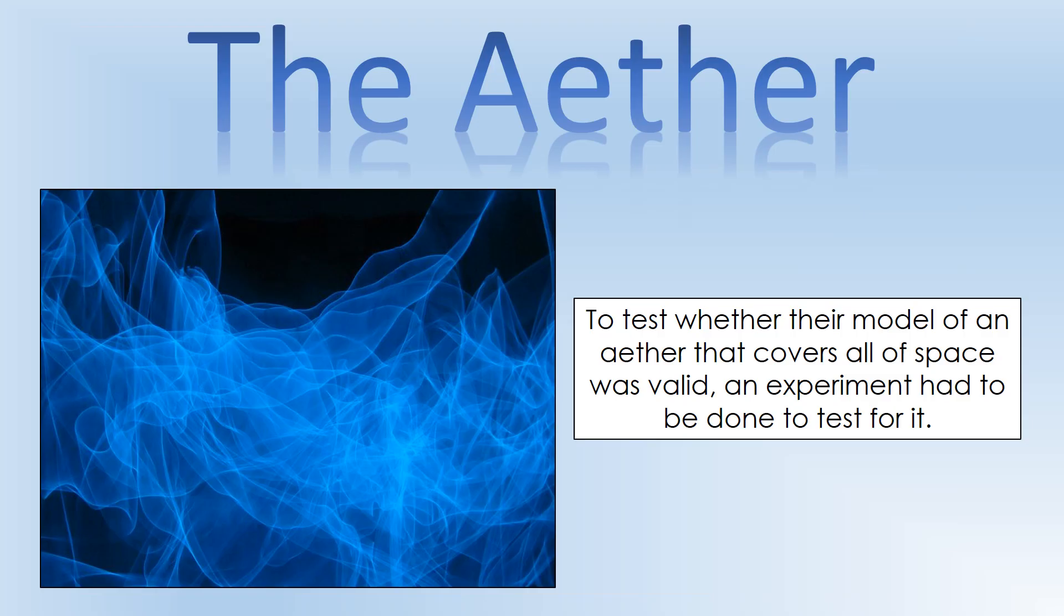So what we've got so far is that scientists think light travels through an ether, so that's what it's making vibrate, that permeates through all space. They've worked out it's an electromagnetic wave because they've measured its speed to be the predicted speed of an electromagnetic wave. So what they now need to do is actually test whether there is an ether or not. Is our idea correct?